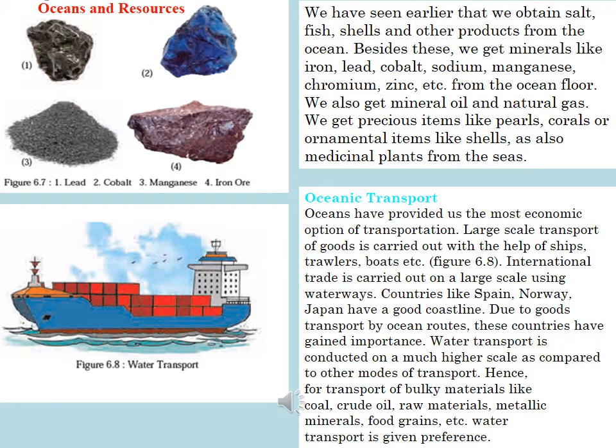We have seen earlier that we obtain salt, fish, shells and other products from the ocean. Besides these, we get minerals like iron, lead, cobalt, sodium, manganese, chromium, zinc etc. from the ocean floor. We also get mineral oil and natural gas. We get precious items like pearls, corals and ornamental items like shells, as also medicinal plants from the seas.